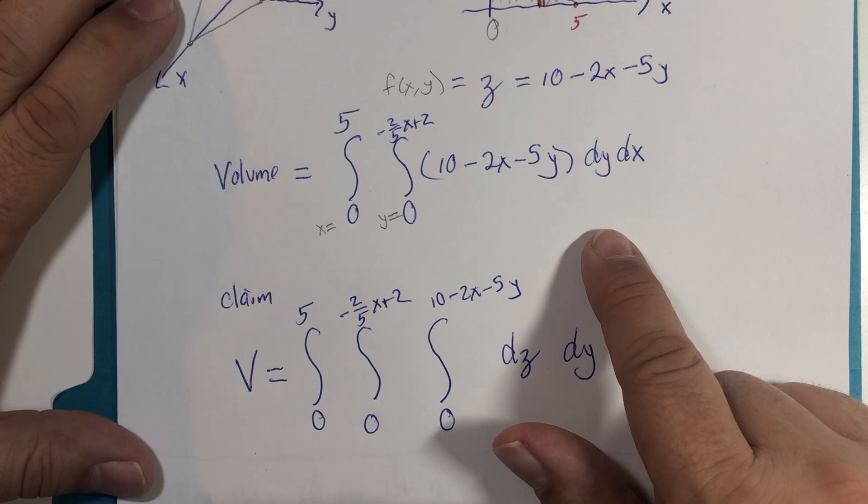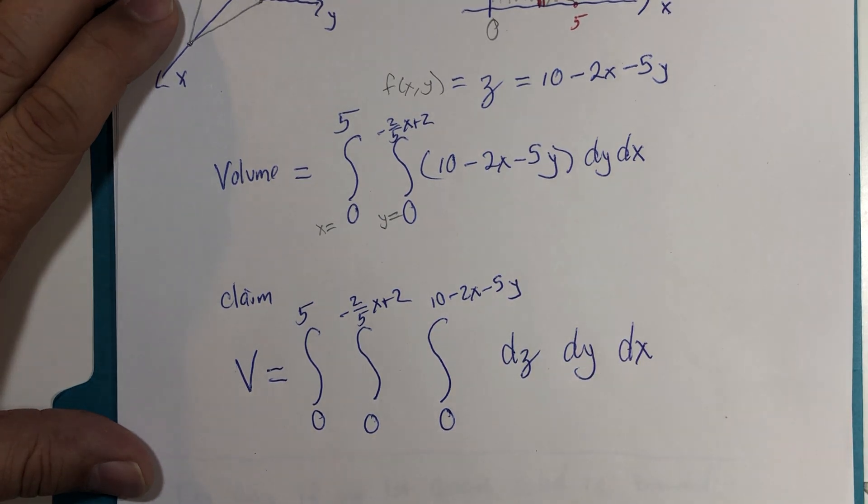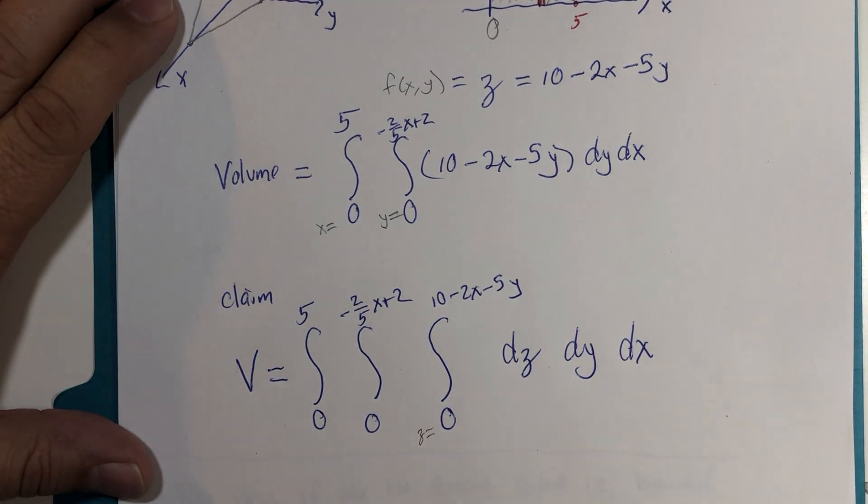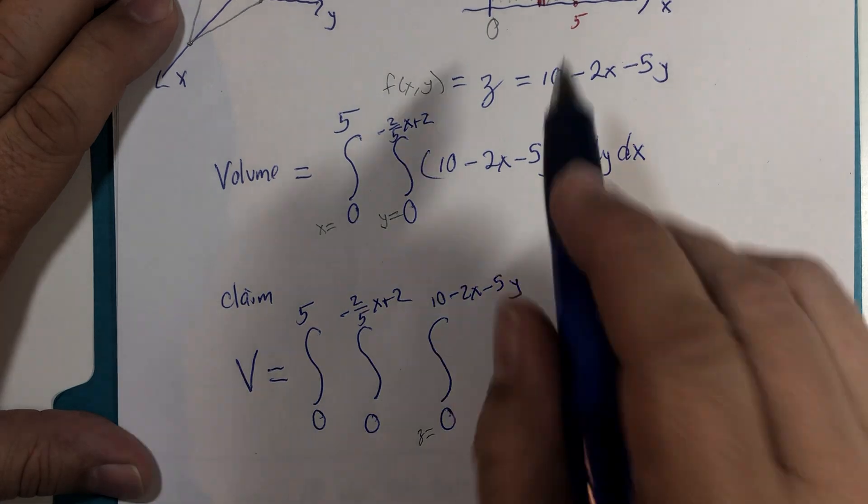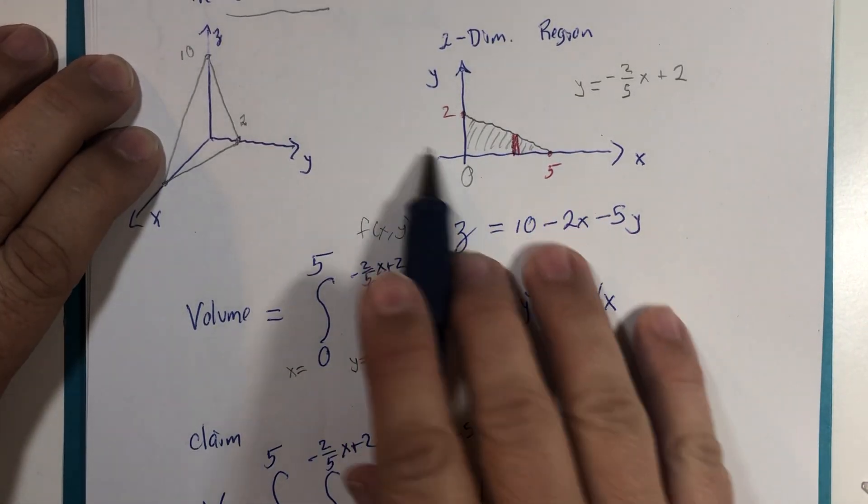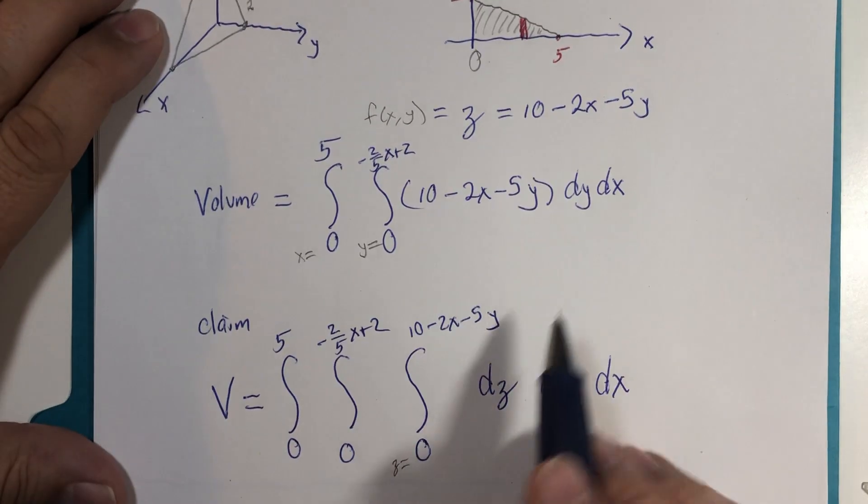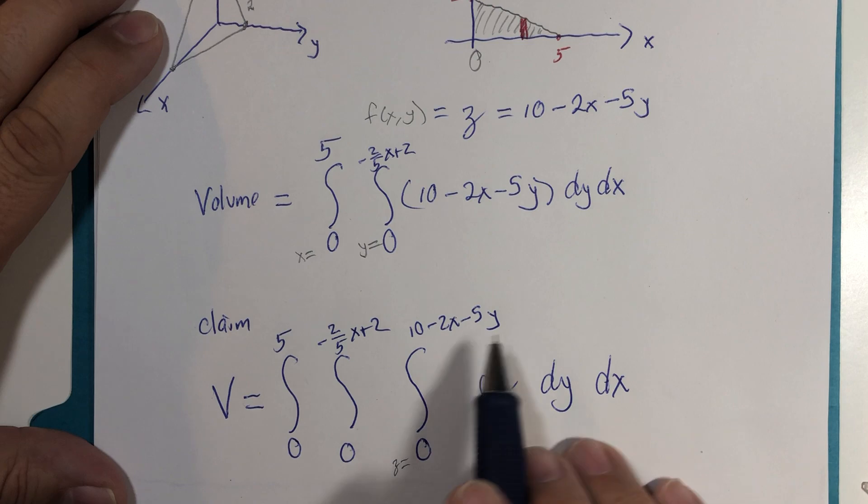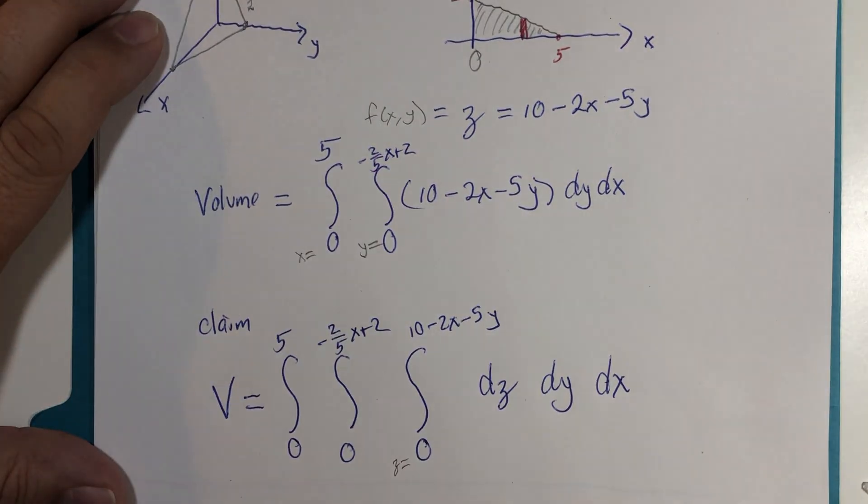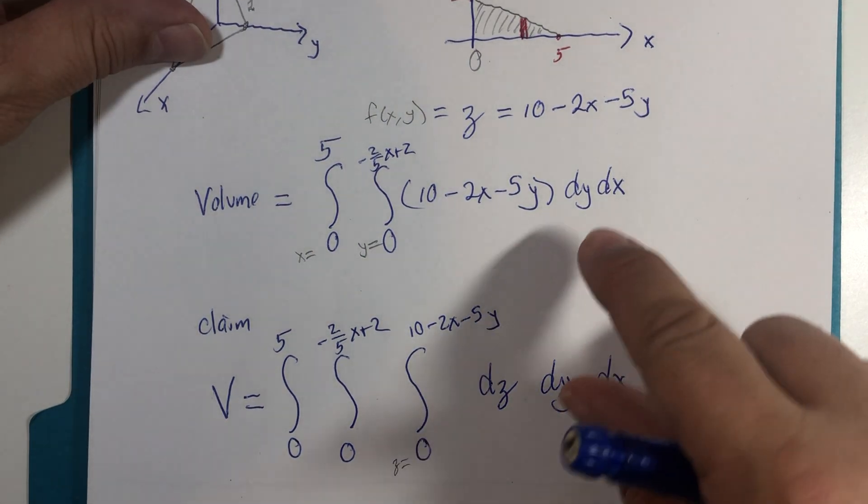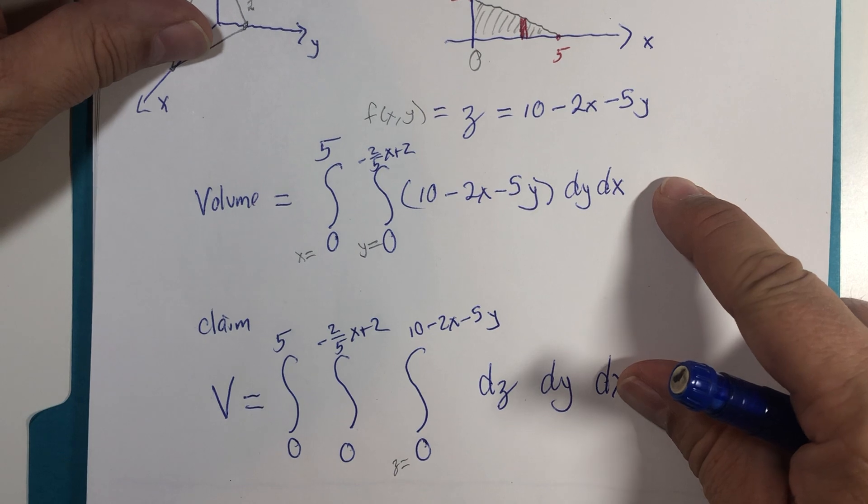I claim that this triple integral is equivalent to that double integral. Trying to imply a purpose for the triple integration, but not do it the same way the textbook would do it. So first things first, z equals 0 is another name for the xy plane. The ground, so to speak. Then z equals 10 minus 2x minus 5y would be our third dimension. So let's verify that these two are identical to each other.